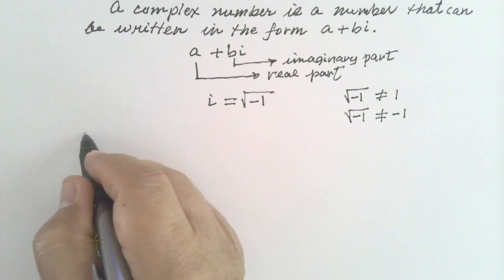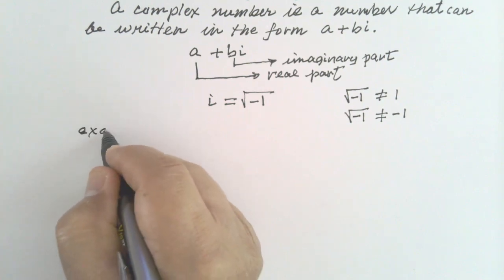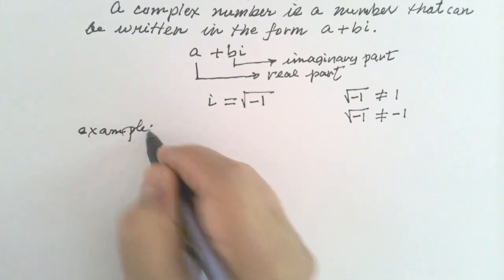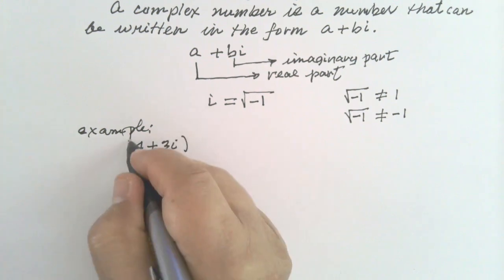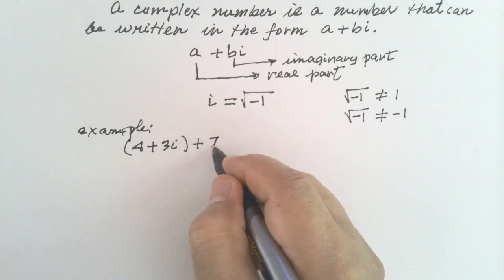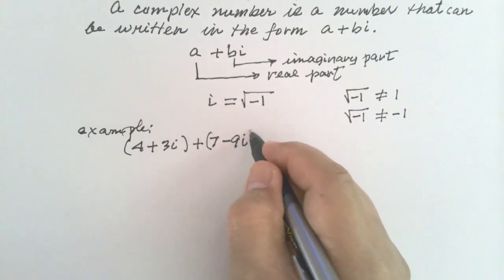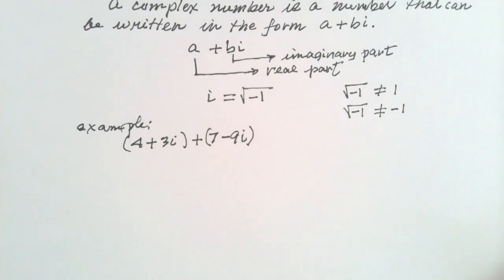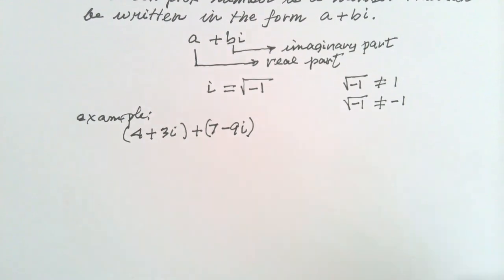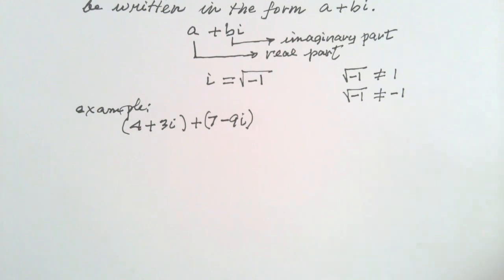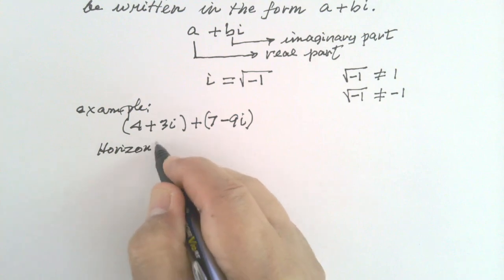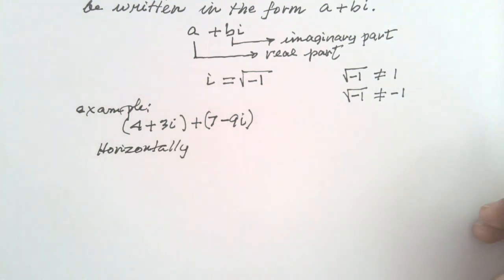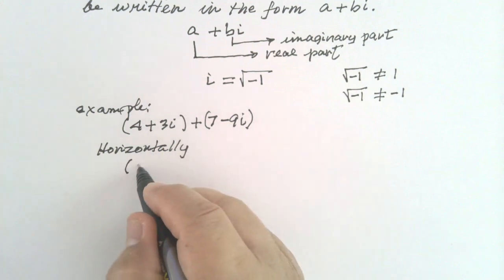Example. Now this can be done in two ways. We can add this horizontally and vertically. Horizontally. Let us write the exercise again.